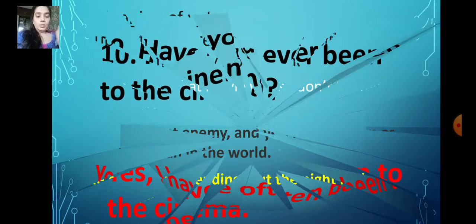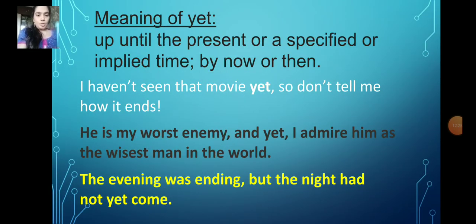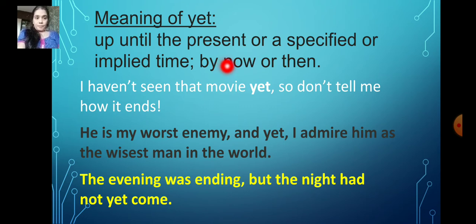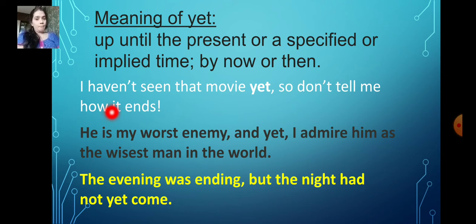This was page number 11. Now we move on to page number 12. On page 12, we have to use the word 'yet' — Y-E-T. What is the meaning of 'yet'? It means up until the present, or a specified or implied time, or by now, or then. There are many meanings — you will understand better when you read the example sentences.